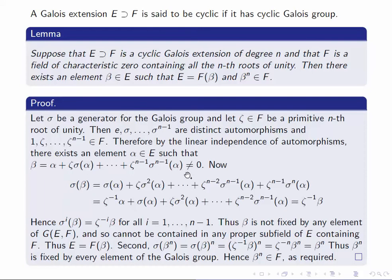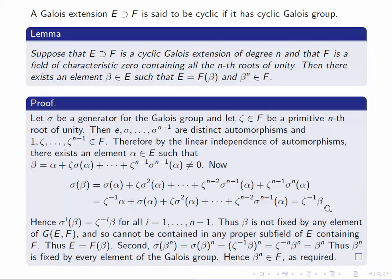Pick such an alpha and let beta be the element alpha + zeta·sigma(alpha) + … + zeta^(n−1)·sigma^(n−1)(alpha). Apply sigma to beta. We get sigma(alpha) + zeta·sigma²(alpha) + … because zeta is in the base field F. The final term is zeta^(n−1)·sigma^n(alpha), and since sigma^n is the identity, this is zeta^(n−1)·alpha. Pulling this to the front of the sum, we see that sigma(beta) = zeta^(−1)·beta, and more generally sigma^i(beta) = zeta^(−i)·beta.